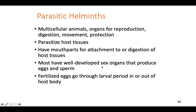Helminths have well-developed sex organs that can produce eggs and sperm — very complex organisms. Fertilized eggs are either passed through feces into the environment for another organism to eat, or the eggs hatch inside you and you pass a little larval version of the parasite through feces. So either adults produce eggs that you pass and are eaten to restart the cycle, or adults produce eggs that hatch into larvae which are shed. It depends on the species of helminth.